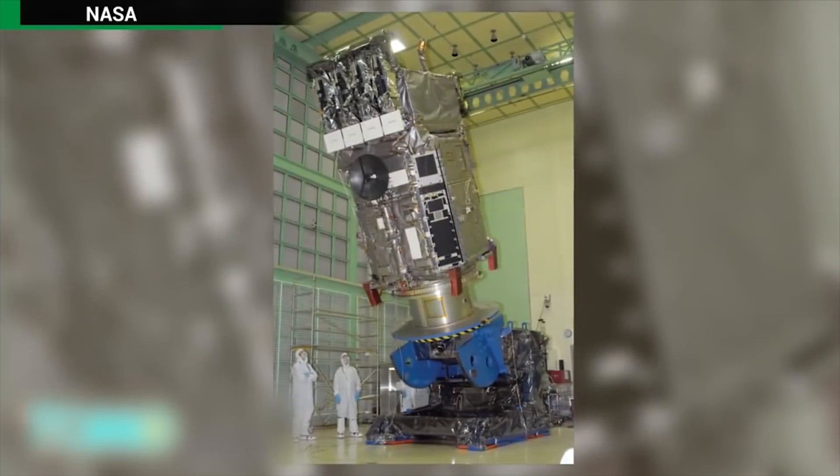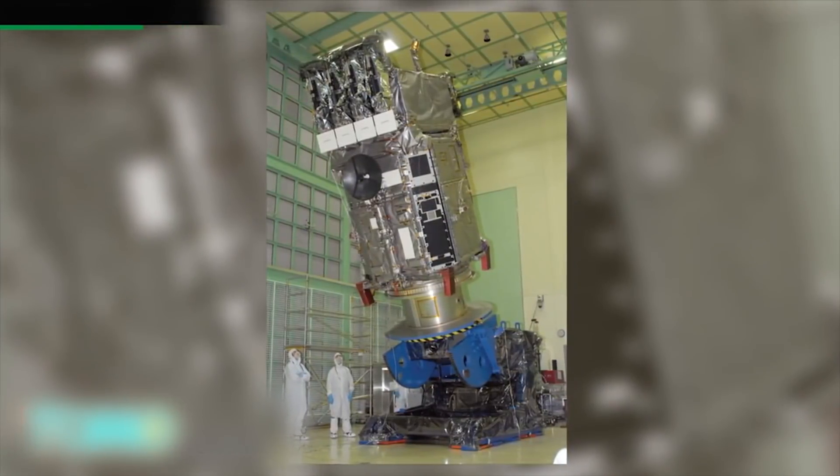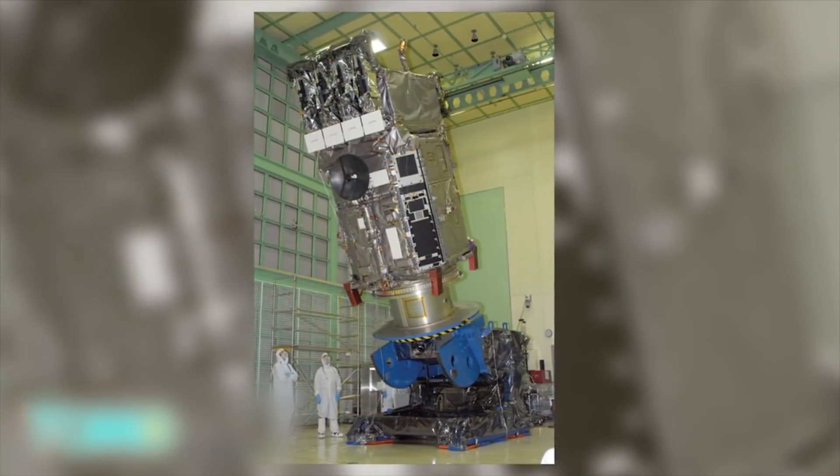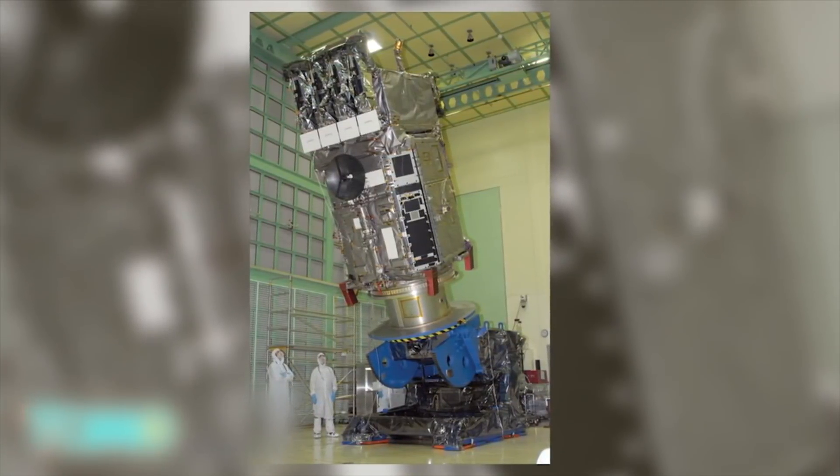The SDO is a four and a half meter high spacecraft, measuring more than two meters on each side and weighing 3,100 kilograms with fuel. It takes almost continuous observations as it orbits the sun.